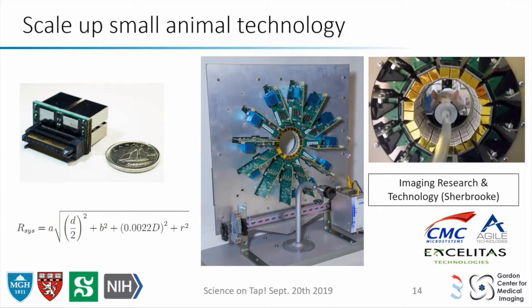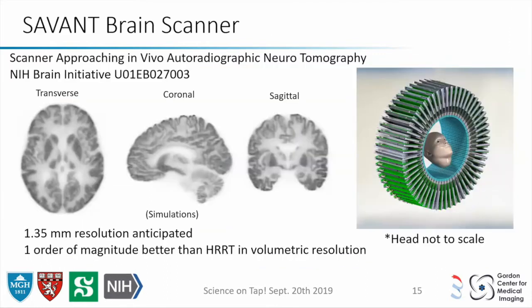The reason this approach works well is that these are APDs — old technology, but with one-to-one coupling, meaning the decoding factor is zero. You don't have to shrink your crystals as much to get high resolution, which matters because very small crystals are harder to manufacture, cost more, and have more losses. Simulations show about 1.35 millimeter resolution in the center of the field of view — one order of magnitude better in volumetric resolution compared to the HRRT. We received funding last year to build this scanner over five years.